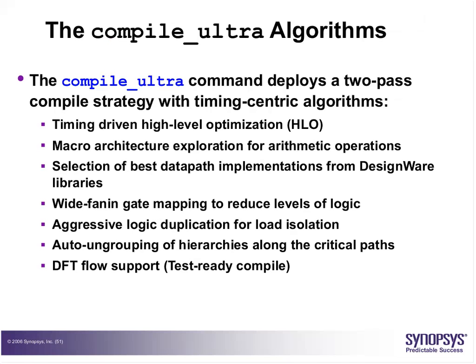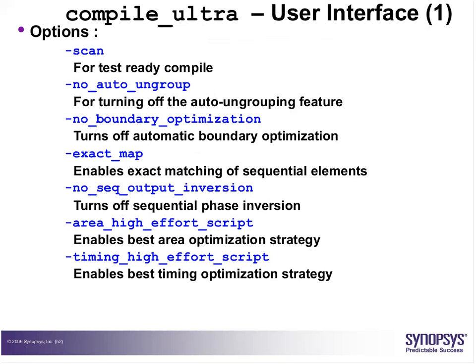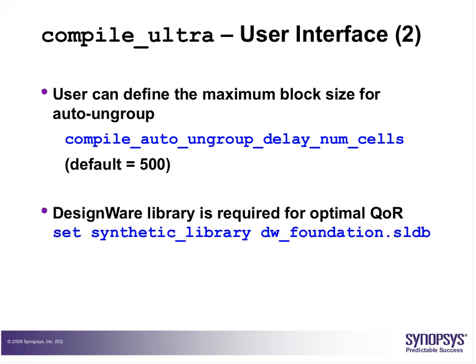Compile ultra by default has two levels of compile happening. Unlike regular compile, it has timing-driven high-level optimization. It does architecture exploration for arithmetic operations, selecting the best data path implementation from the design ware library. There is wide fanin gate mapping, aggressive logic duplication, and auto ungrouping of hierarchical modules along critical paths — which can be stopped with no_auto_ungroup. There is also DFT flow support.